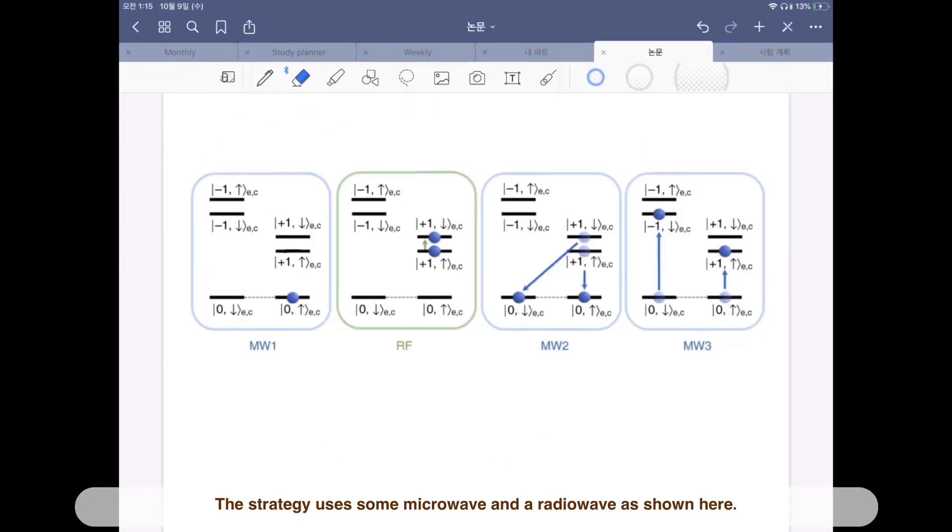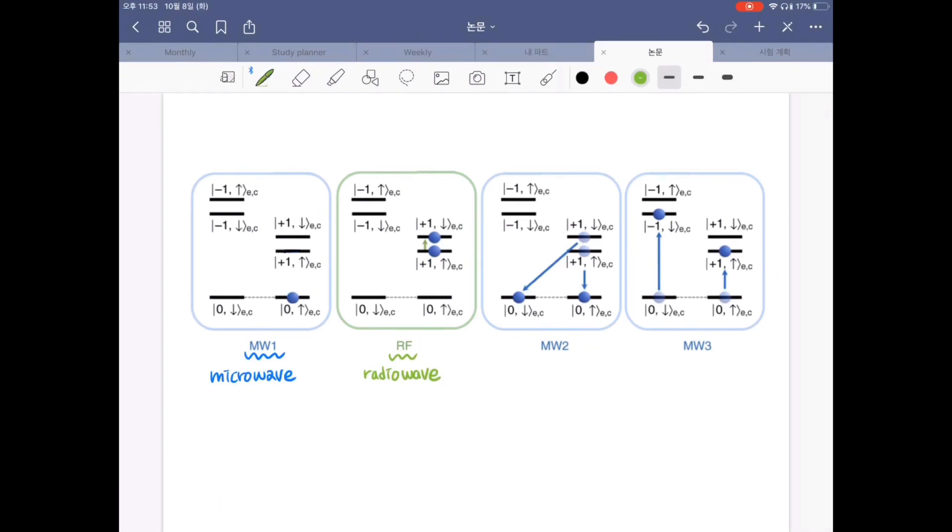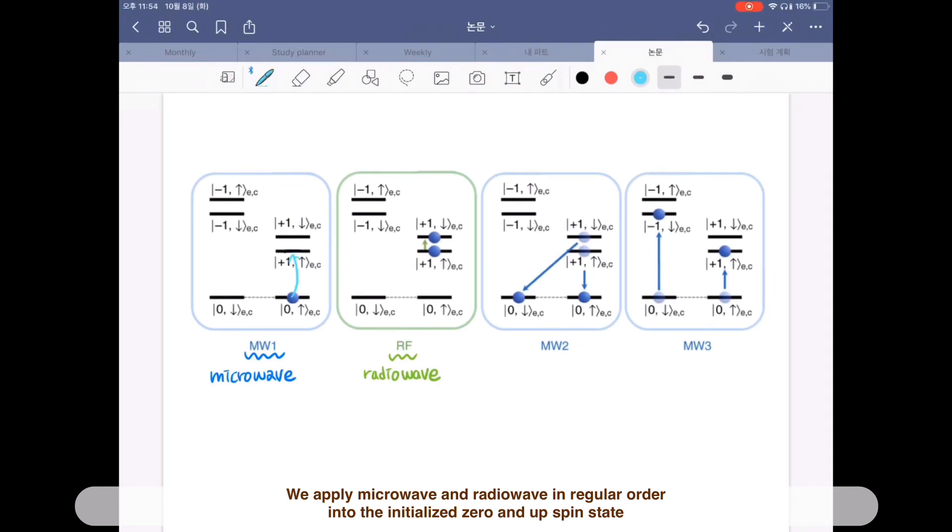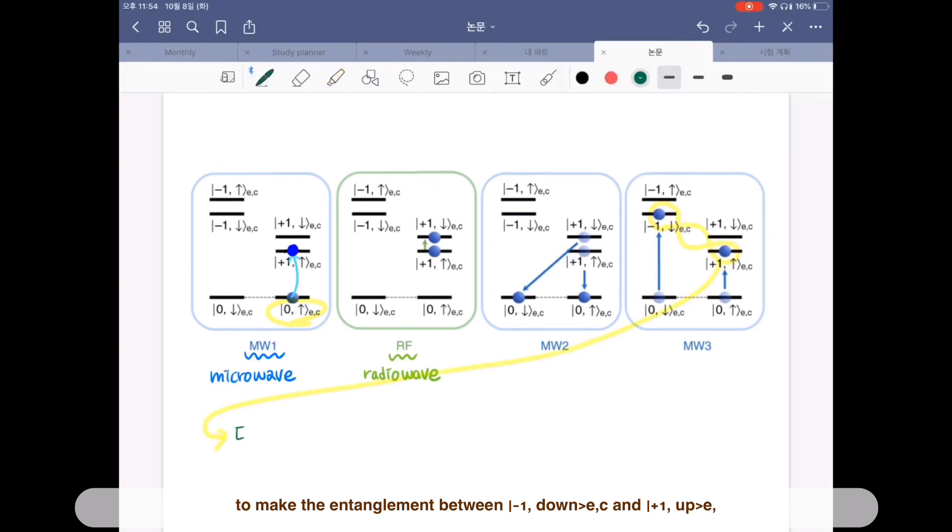The strategy uses some microwave and radio wave as shown here. We apply microwave and radio wave in regular order into the initialized zero and up spin state to make the entanglement between minus one down and plus one up spin state of electron and carbon which can be described as bell state.